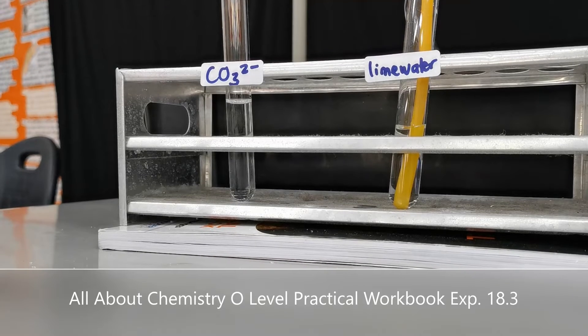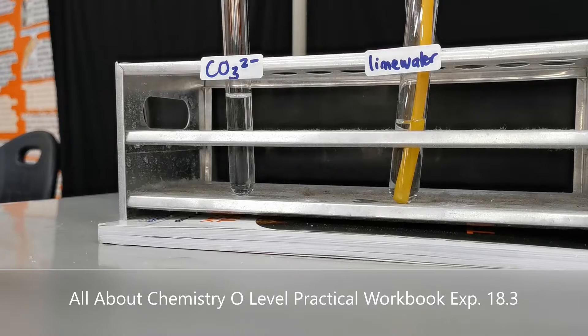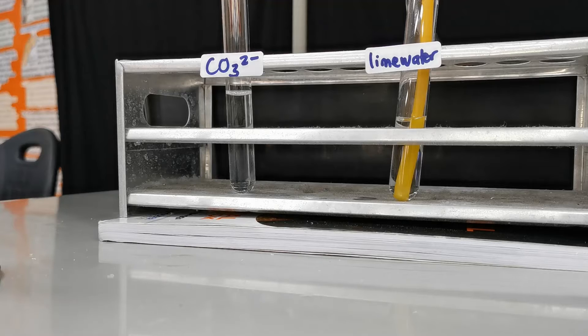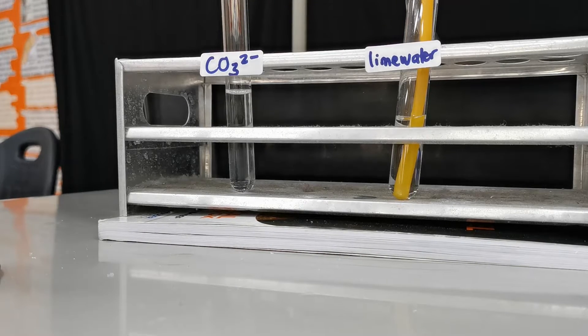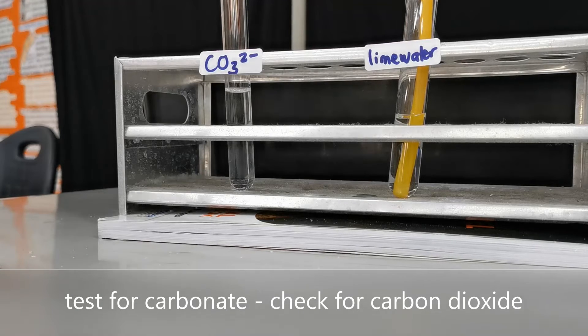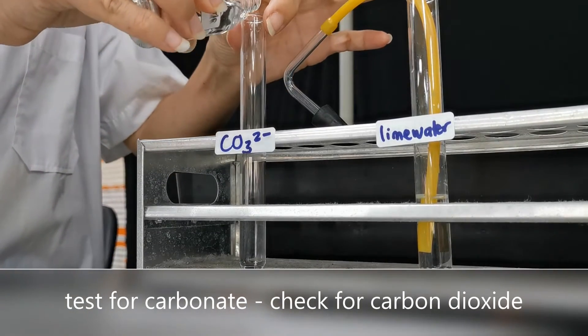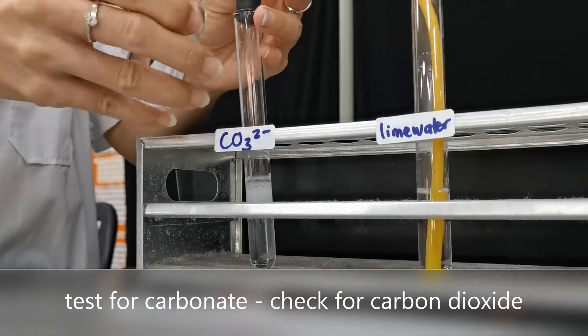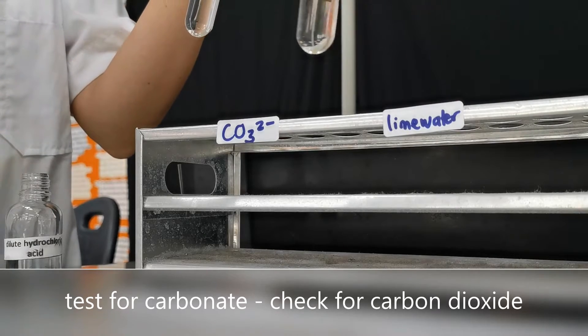In this experiment, we're going to do 18.3 from All About Chemistry O Level Practical Workbook. We're testing for anions. The first anion we're going to test is carbonate. As we all know, carbonates react with any acid, so we will add dilute acid here, capture the gas, and transfer it.